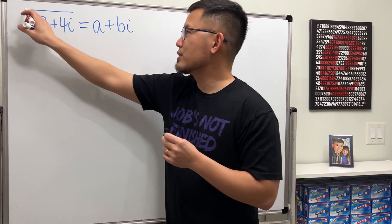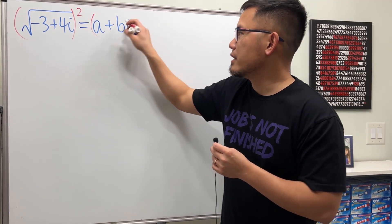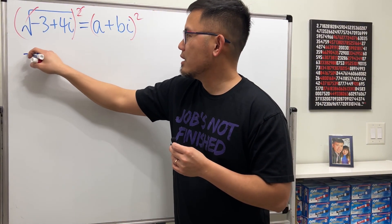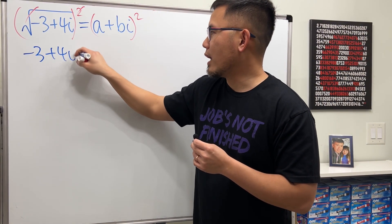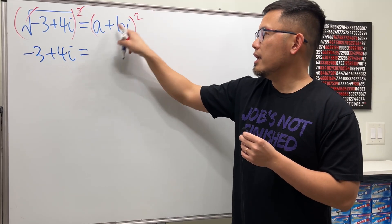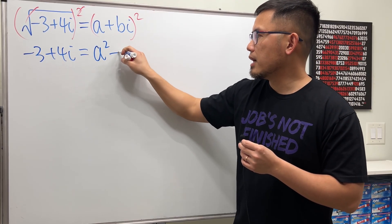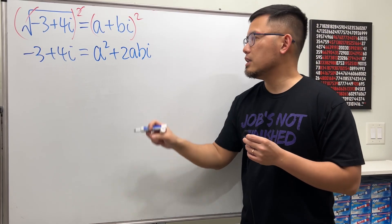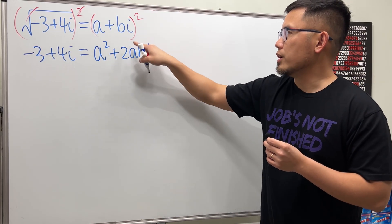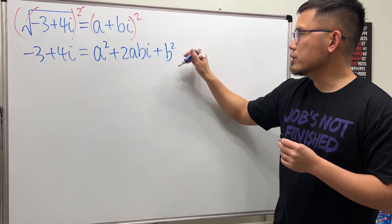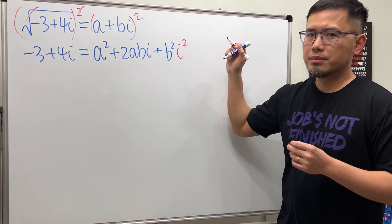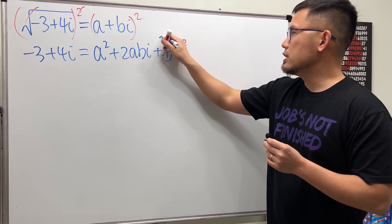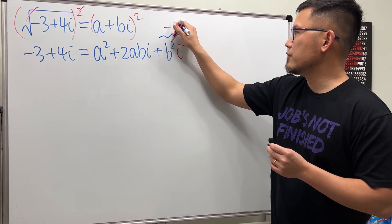Let's square both sides to get rid of the square root. We get negative 3 plus 4i equals a squared plus 2ab·i plus b squared·i squared. Since i squared is negative 1, the last term becomes negative b squared.